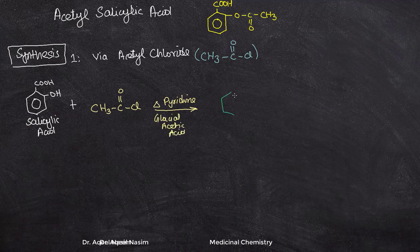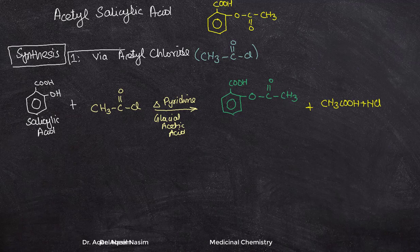This reaction forms acetyl salicylic acid — a benzene ring with a carboxylic group and an O-C(=O)-CH₃ ester linkage — along with the liberation of HCl. This is the first pathway for the synthesis of acetyl salicylic acid.